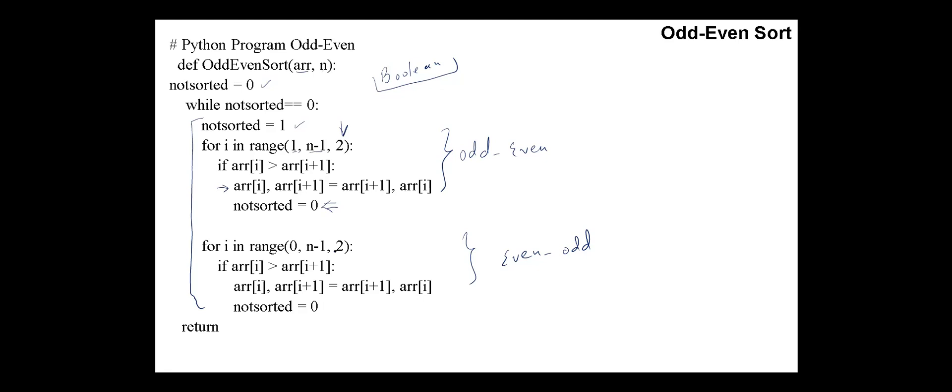And in the second loop, we perform the even-odd phase for i in range(0, n-1, 2). Again, we compare these pairs. And if we perform any swap, then the sorted is reset to 0.